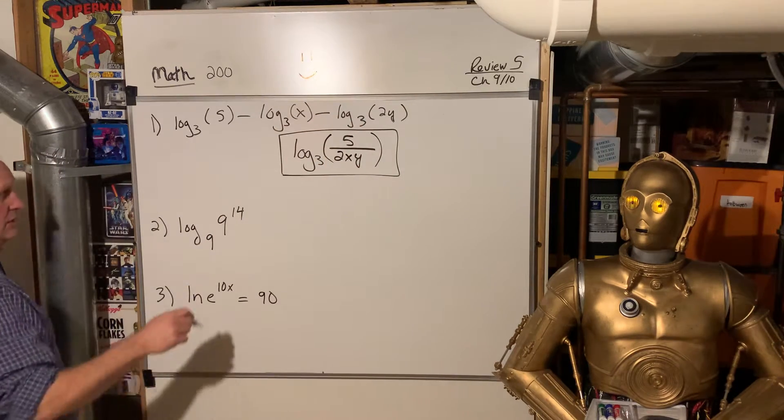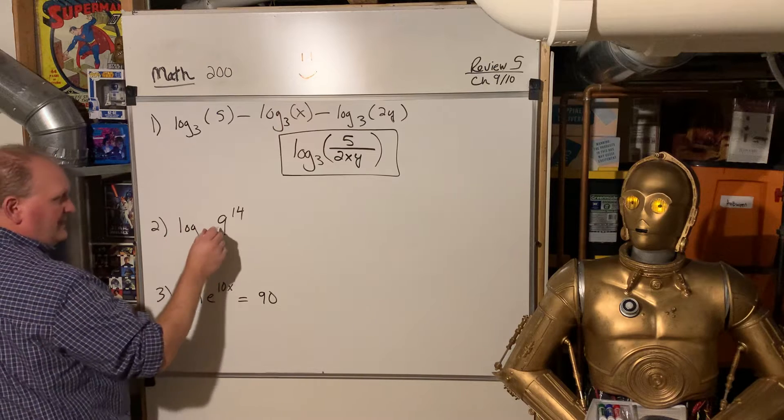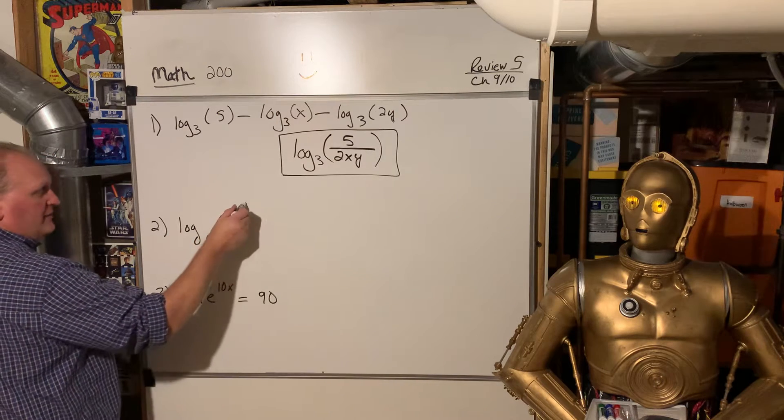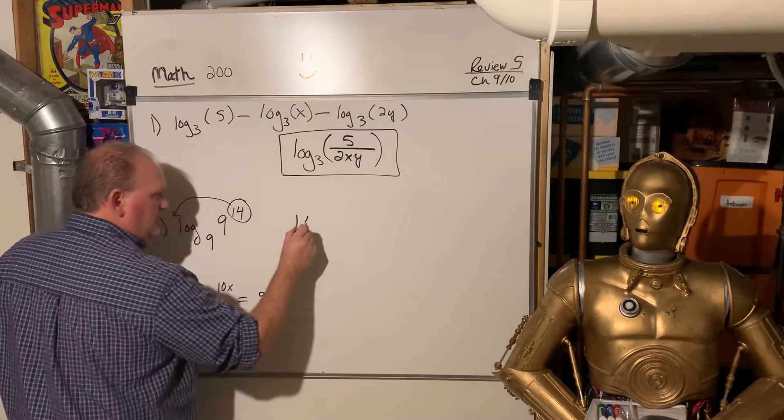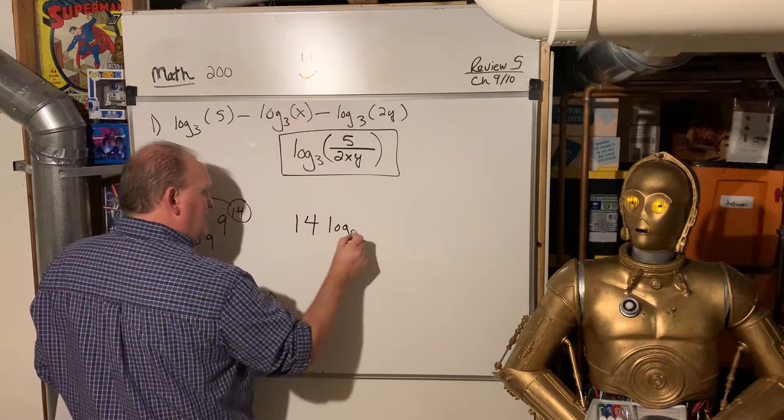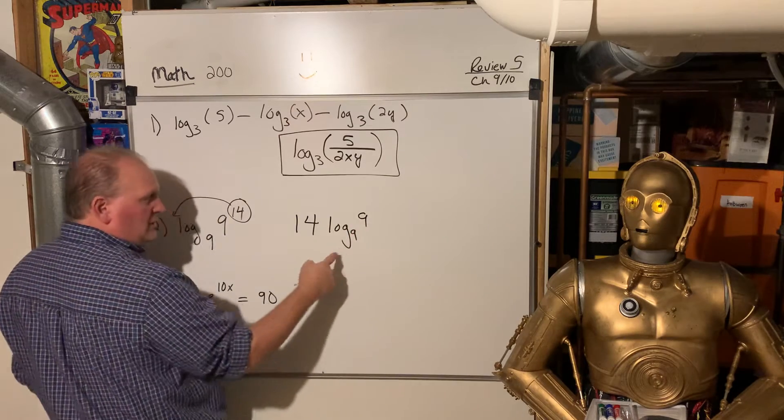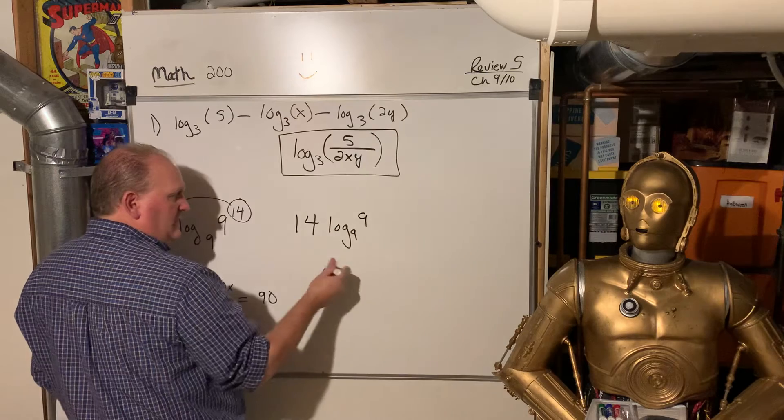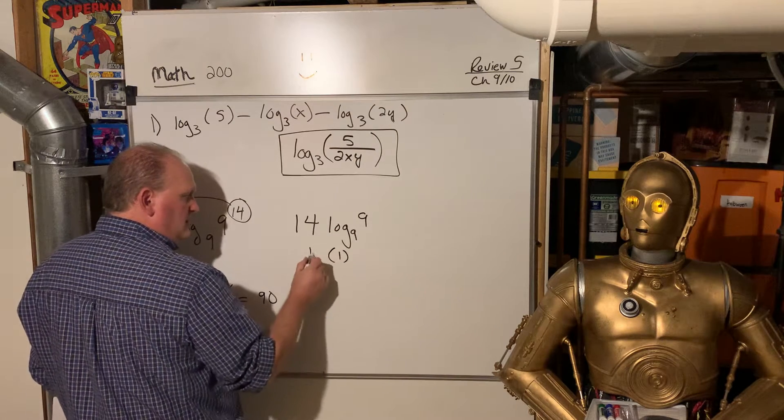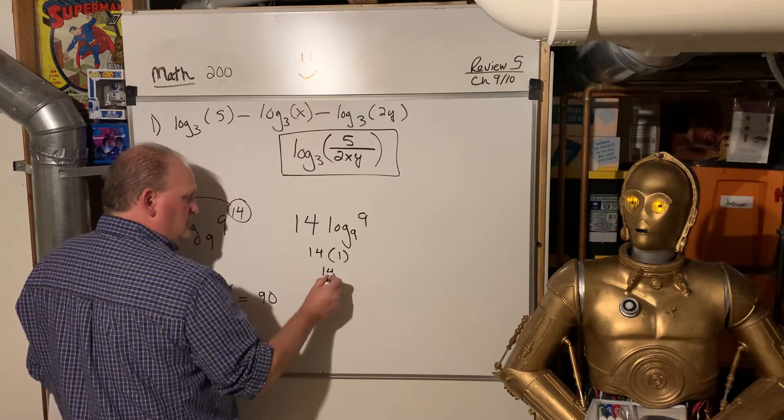Okay, let's do the next one. Number 2, log base 9 of 9 to the 14th. Remember we can say come on down to the 14th. So we have 14 log base 9 of 9. Remember what logs mean - it's asking 9 to what power gives you 9. Well that's 1. So that answer is just 14.